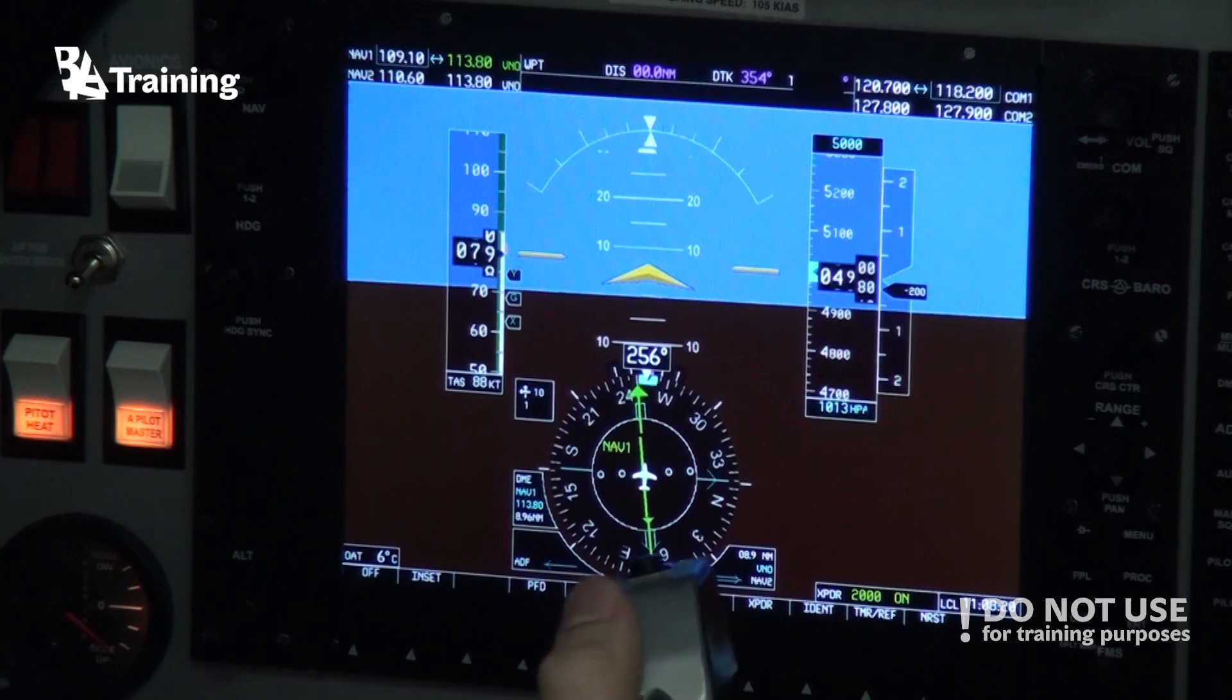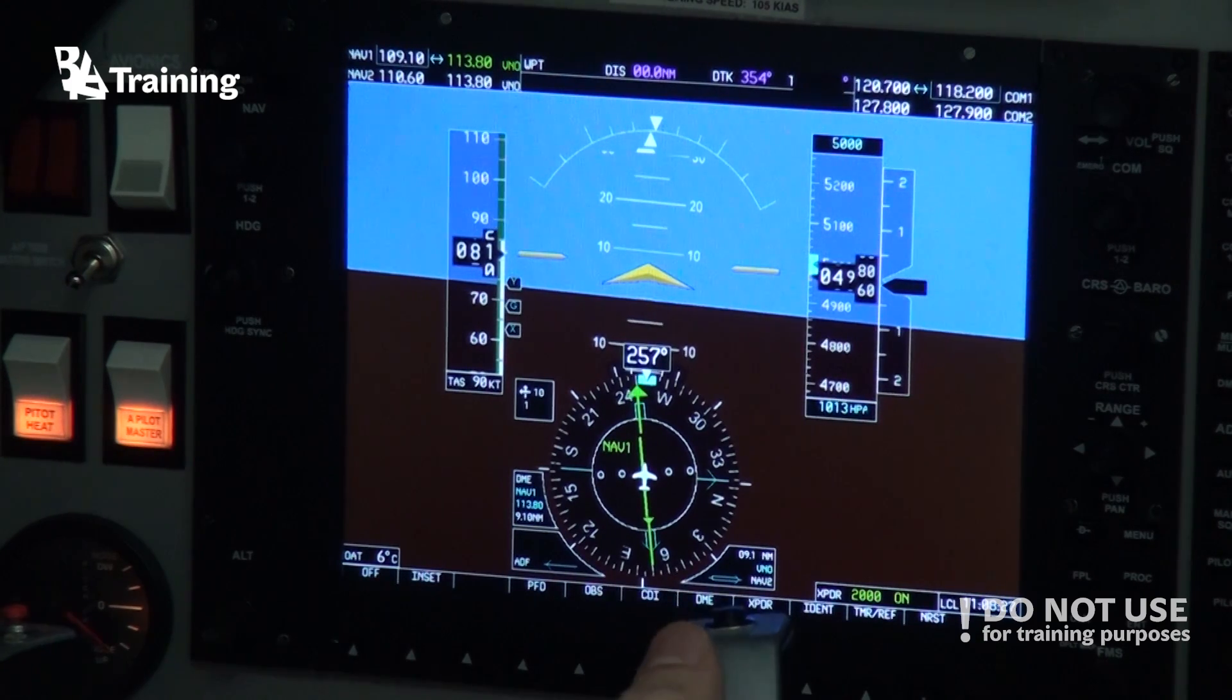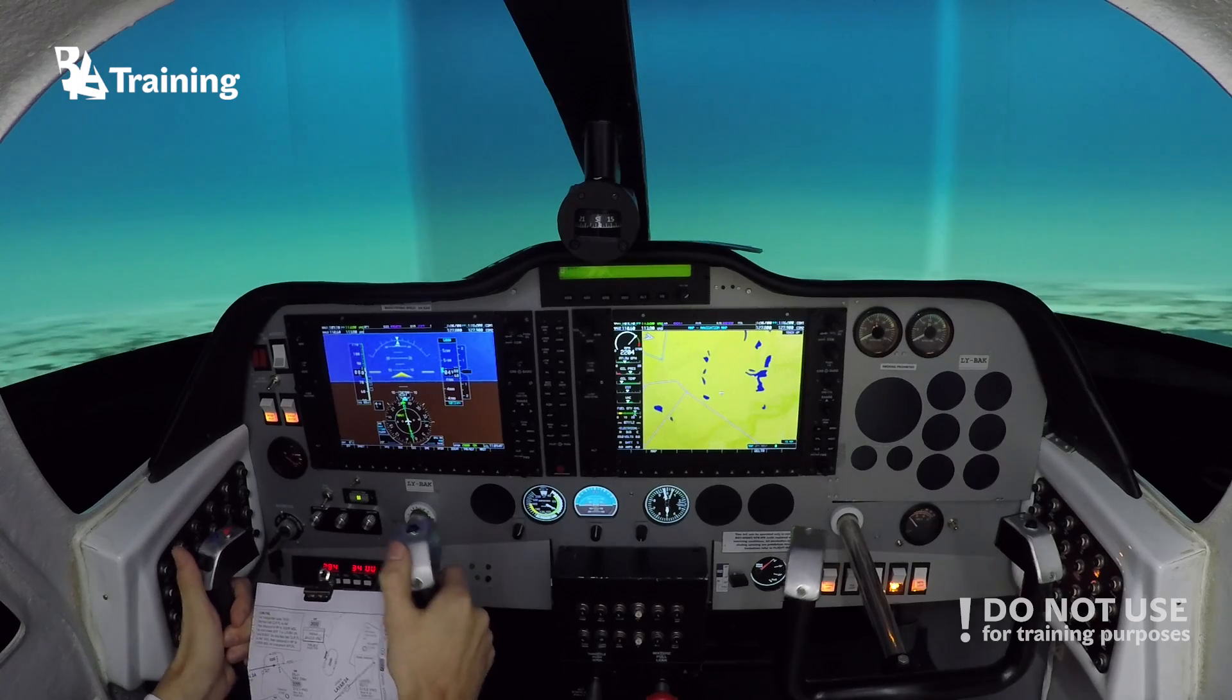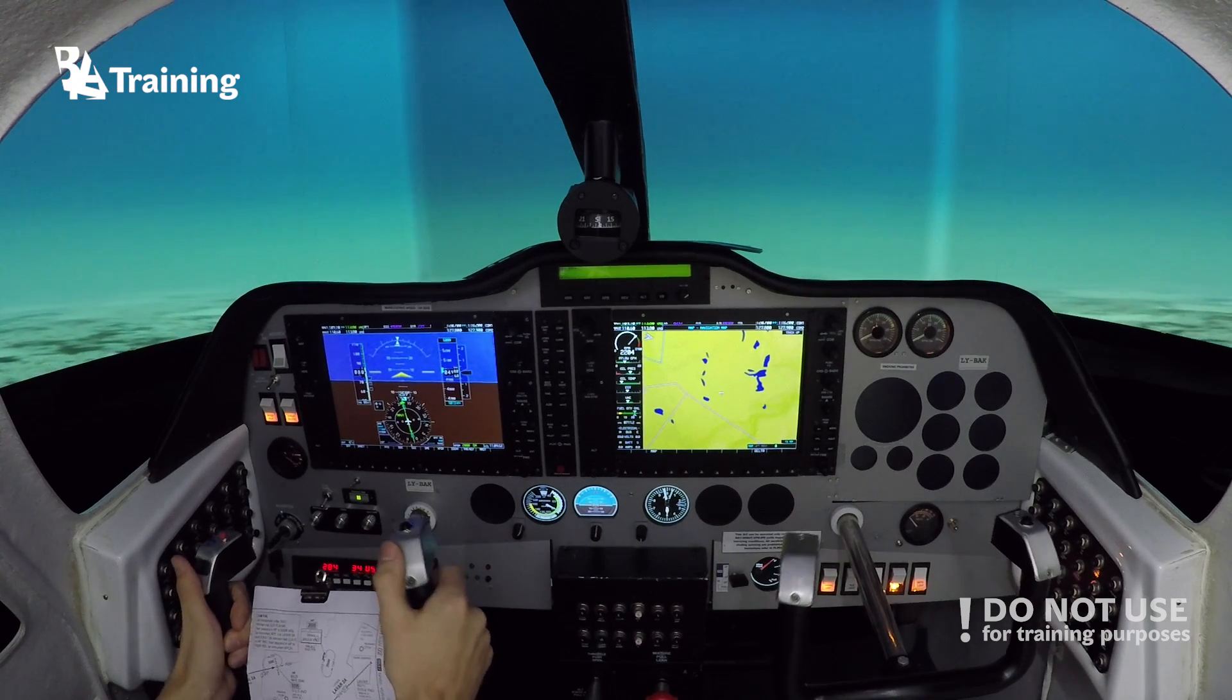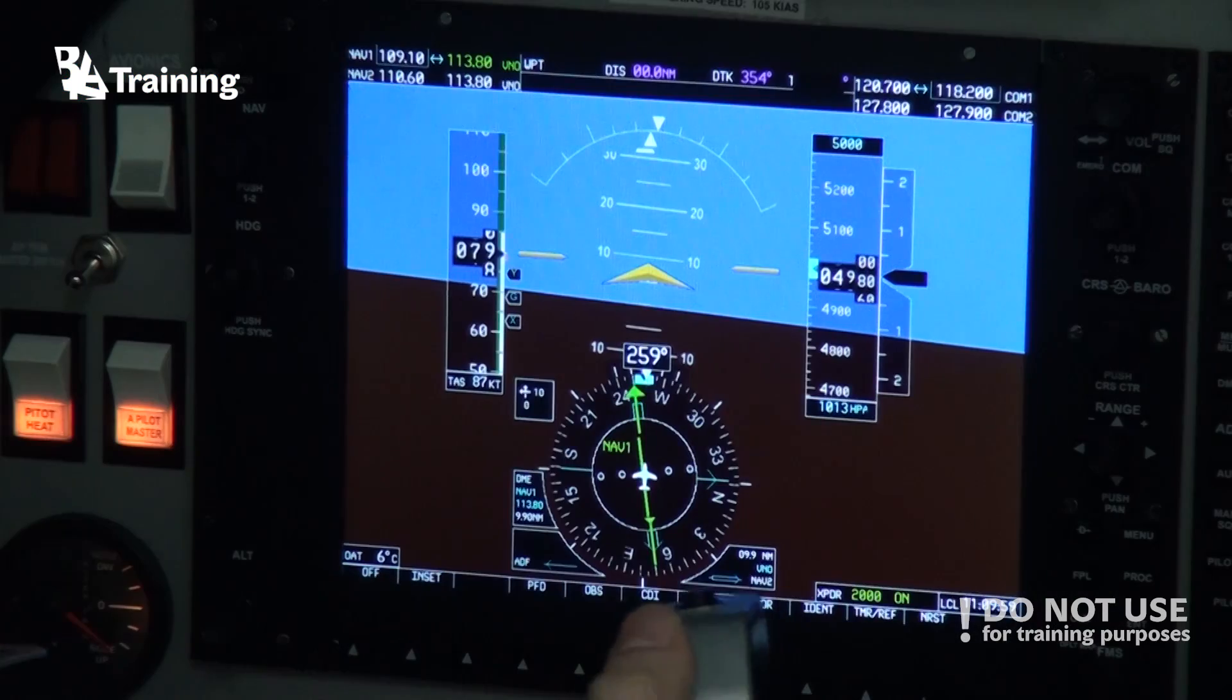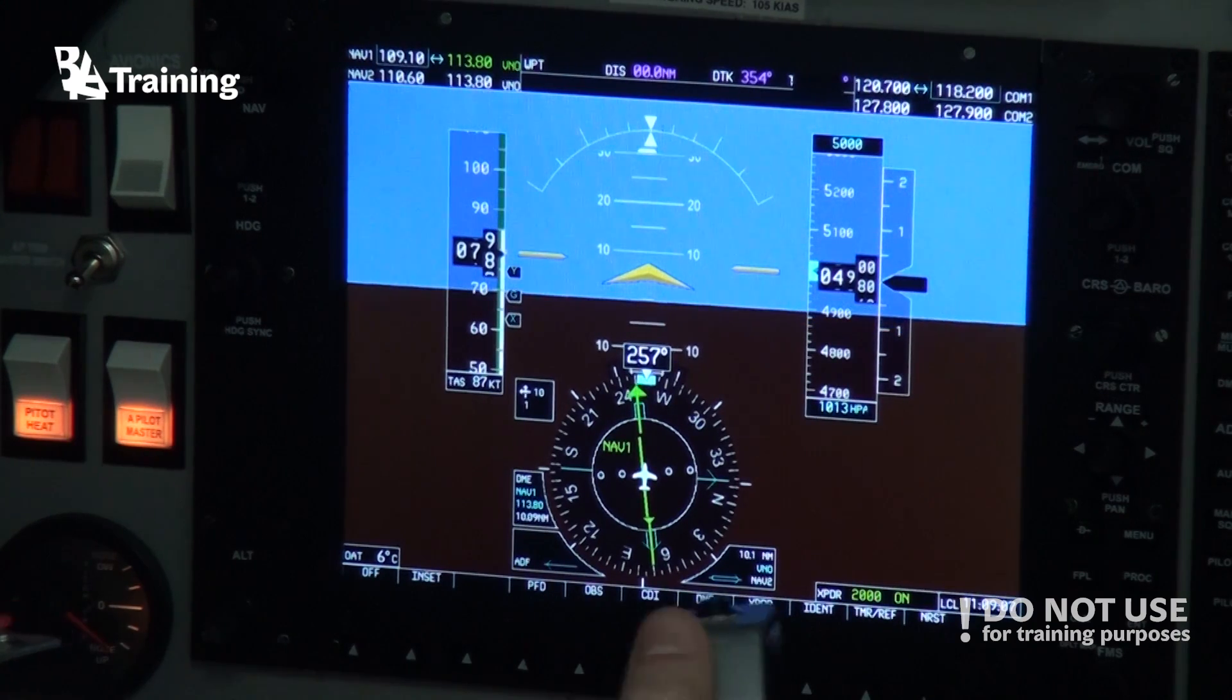For example, now we have 10 knots, we should use two thirds or 66 percent of the components for correction. So approximately six or seven degrees to the right in this case. So when I get to the fix, the first thing I will do is to turn to the right, set the heading bug, then I will turn the course to the inbound 070 and then start the timer.